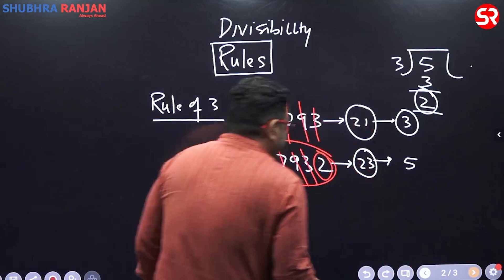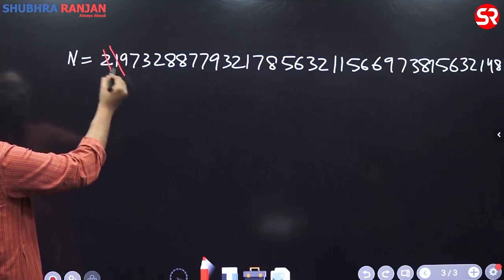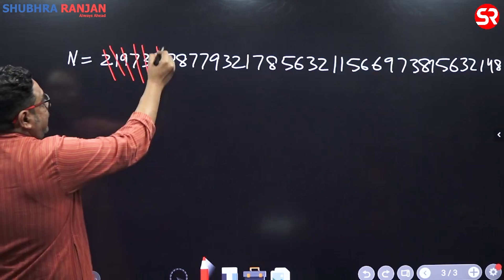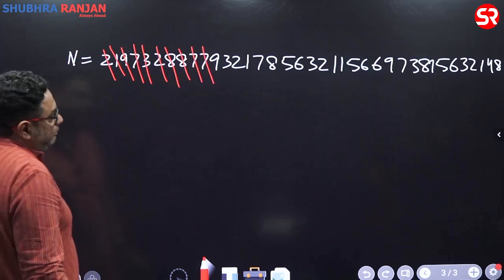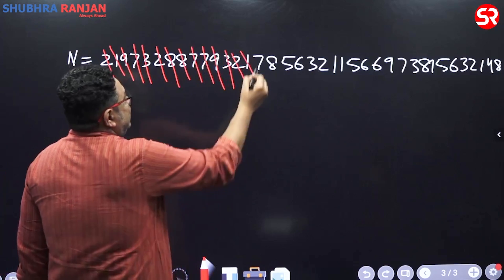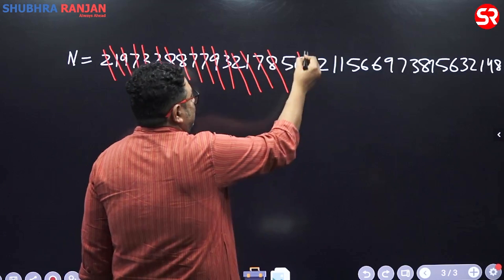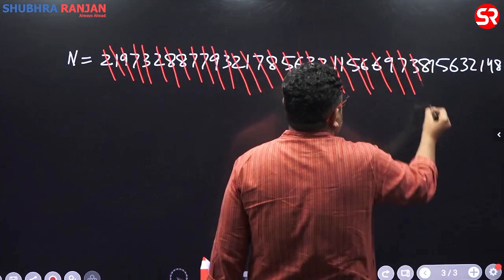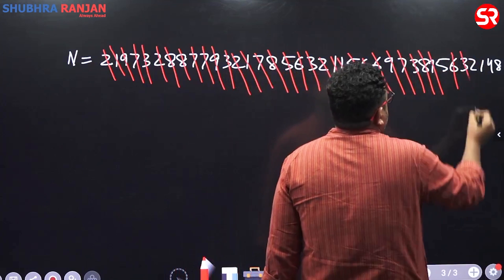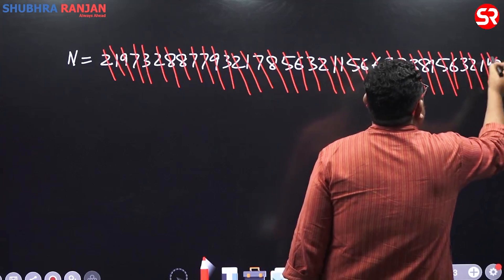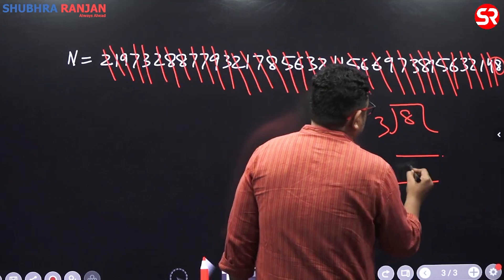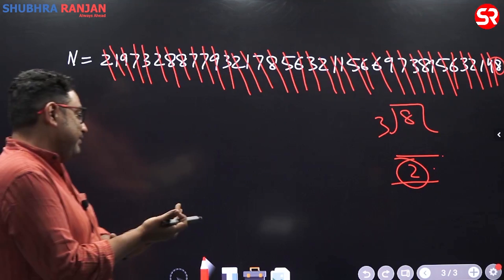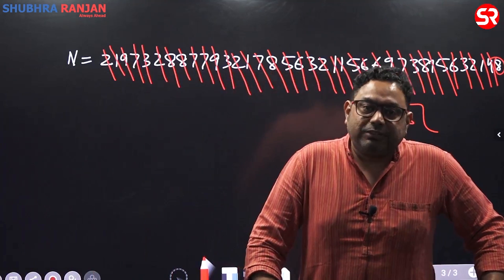Now apply this to the bigger number. 2+1=3, ignore; 9, ignore; 7+2=9, ignore; 3, ignore; 8+7=15, ignore; 8+7=15, ignore; 9, ignore; 3, ignore; 2+1=3, ignore; 7+8=15, ignore; 3+6=9, ignore; 3, ignore; 2+1=3, ignore; 5+1=6, ignore; 6, ignore; 9, ignore; 5+7=12, ignore; 3, ignore; 8+1=9, ignore; 6, ignore; 3, ignore; 2+1=3, ignore; 5+4=9, ignore. Remainder is 8 — wait, 8 divided by 3 gives remainder 2. So N divided by 3 has remainder 2.